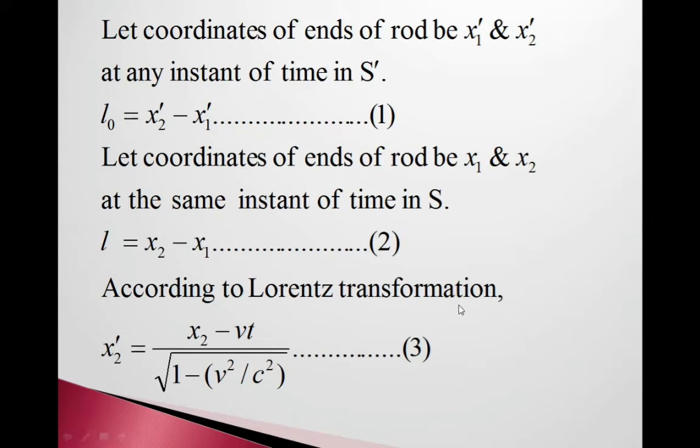According to Lorentz transformation, x2' equals (x2 minus Vt) upon square root of (1 minus V squared upon C squared), equation 3.